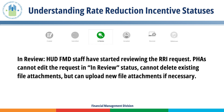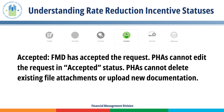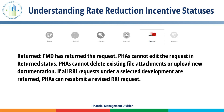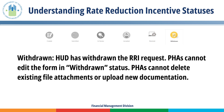In Review: HUD FMD staff have started reviewing the Rate Reduction Incentive request. PHAs cannot edit the request or delete existing file attachments in In Review status, but can upload new file attachments if necessary. Accepted: FMD has accepted the request. PHAs cannot edit the request, delete existing file attachments, or upload new documentation. Returned: FMD has returned the request. PHAs cannot edit the request or delete existing file attachments or upload new documentation. If all Rate Reduction Incentive requests under a selected development are returned, PHAs can resubmit a revised request. Withdrawn: HUD has withdrawn the request. PHAs cannot edit the form, delete existing file attachments, or upload new documentation.